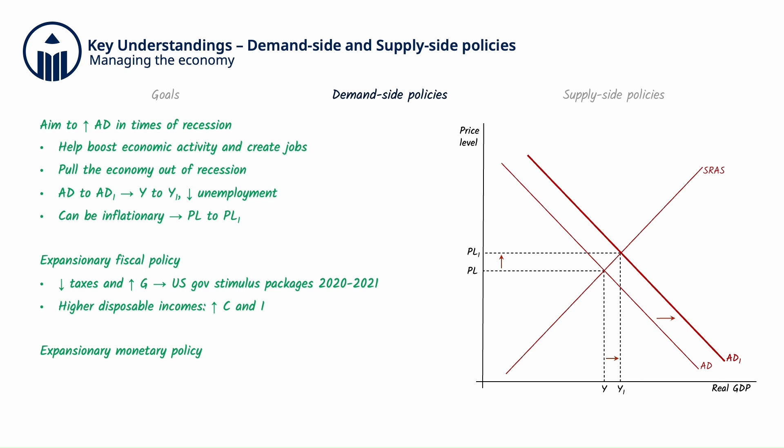Expansionary monetary policy involves decreasing interest rates by increasing the money supply. Lower interest rates encourage more borrowing and less saving, and so the C and I components of AD will increase as a result.